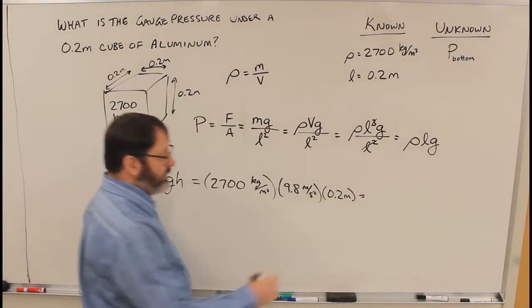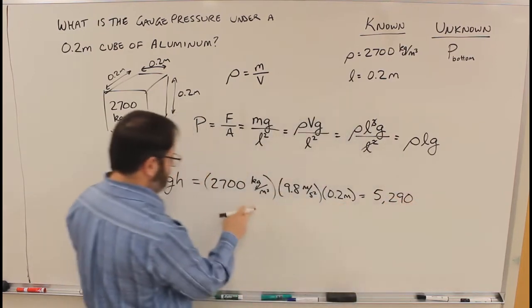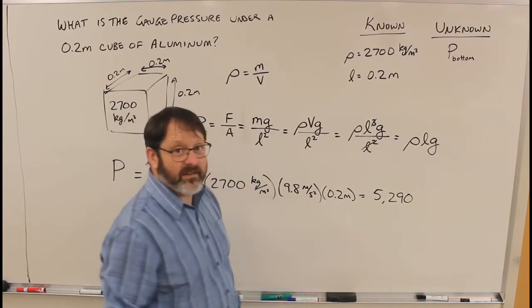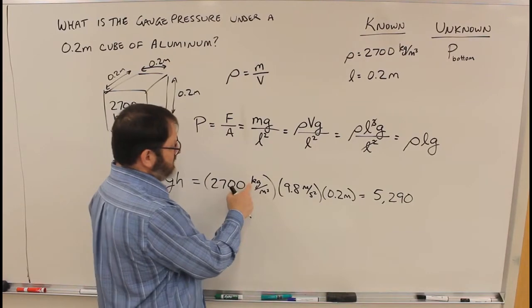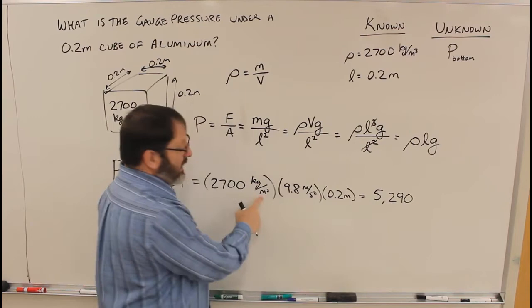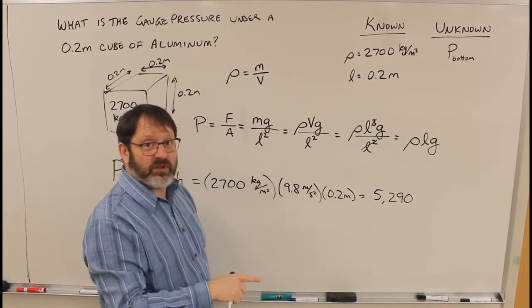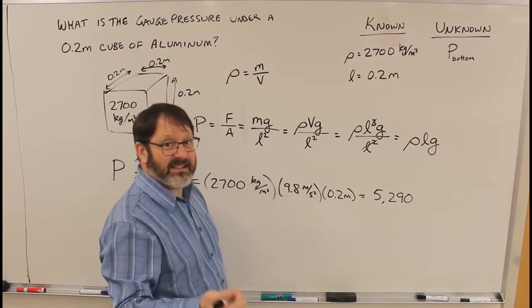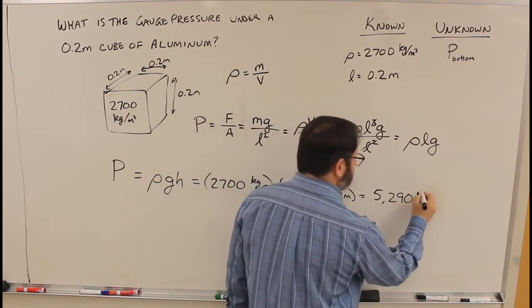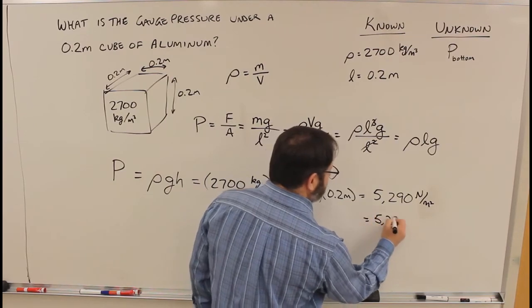What are the units here? These are all SI units: kilograms, meters, seconds. So when you work these all out, this is a kilogram meter per second squared, that's a Newton. This is a meter on top and meter cubed on the bottom, so it's meter squared on the bottom. So this is Newtons per square meter. And there's actually an SI unit for that, it's called the Pascal. So Newtons per square meter is 5,290 Pascals.